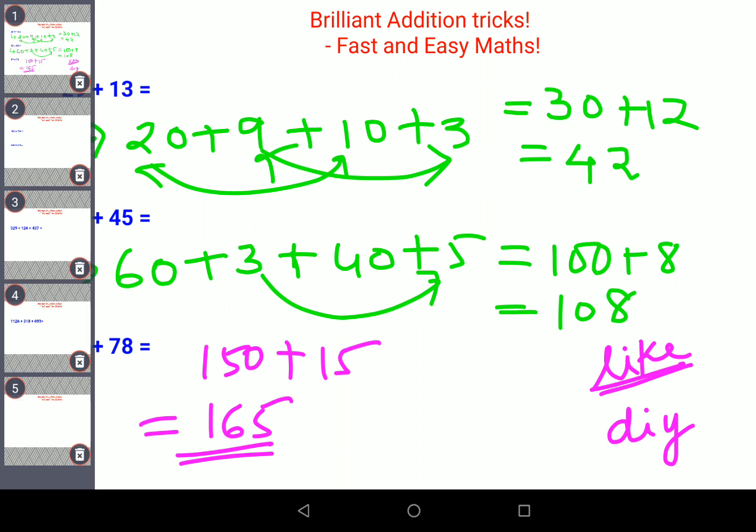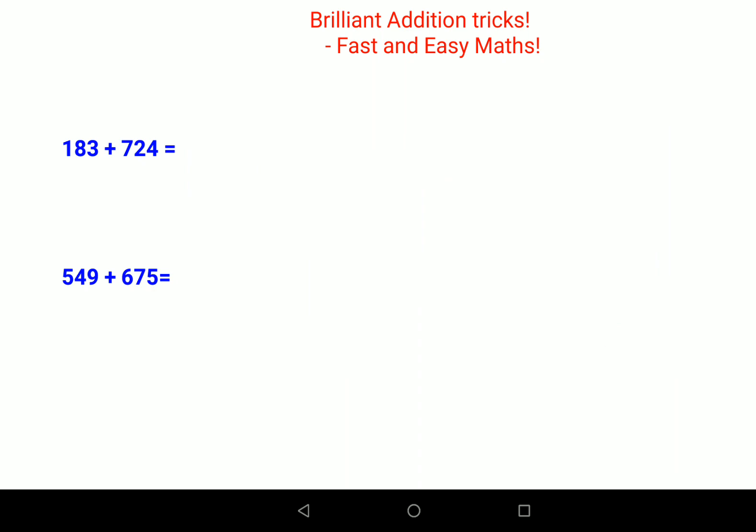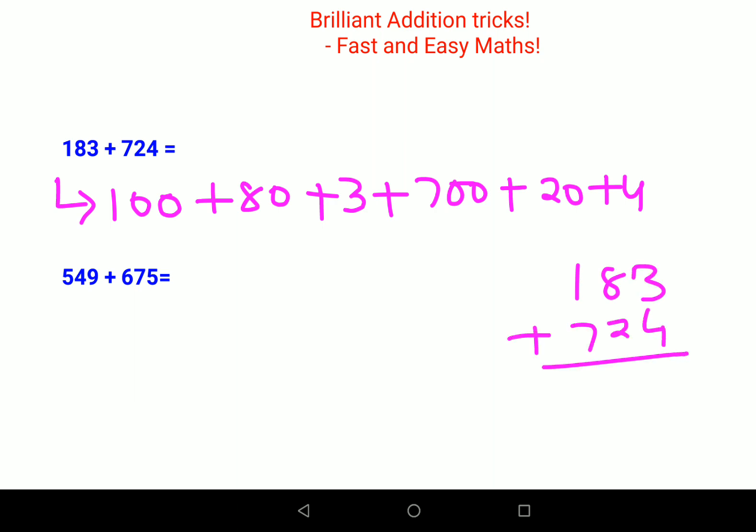Now let's do a little bit more with three digit numbers. First we'll start and follow the breaking pattern. This is 100 plus 80 plus 3 plus 700 plus 20 plus 4. If you remember, this was the actual method taught in school, but unfortunately we started doing it this way with pen and paper.